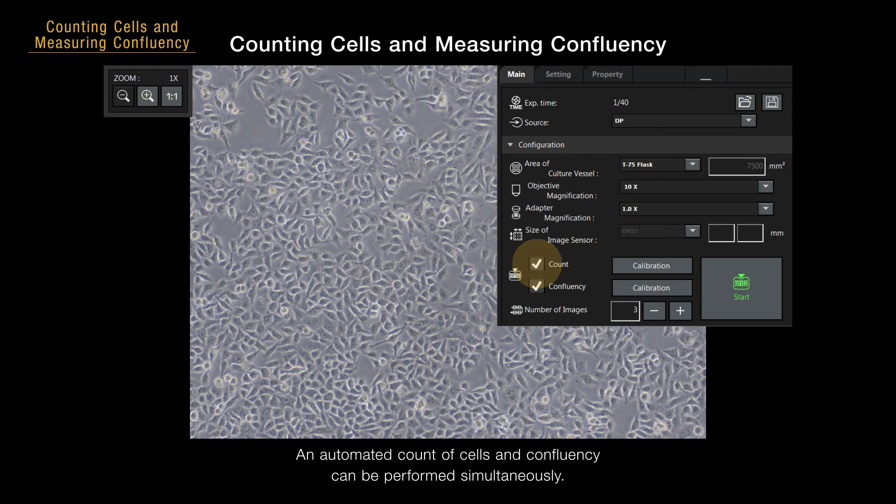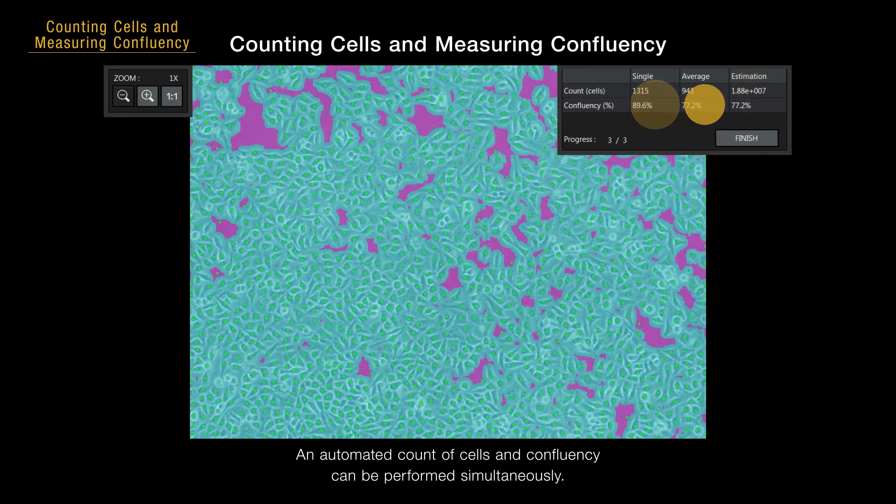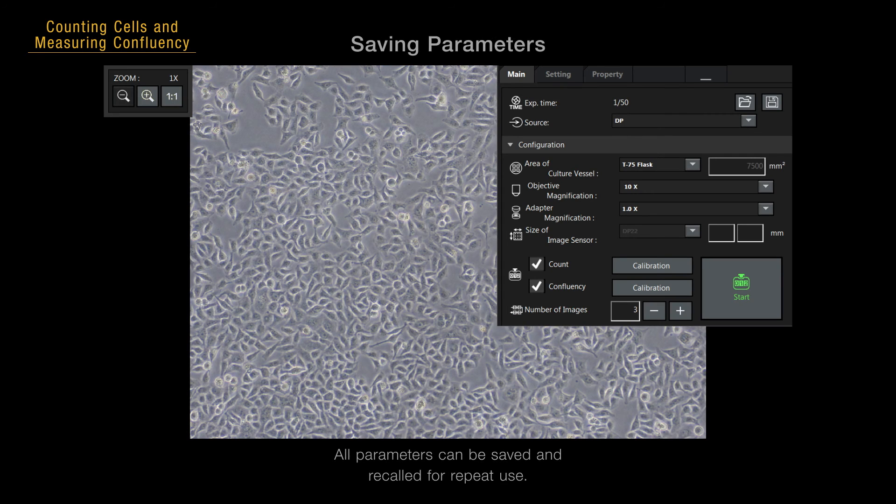An automated count of cells and confluency can be performed simultaneously. All parameters can be saved and recalled for repeat use.